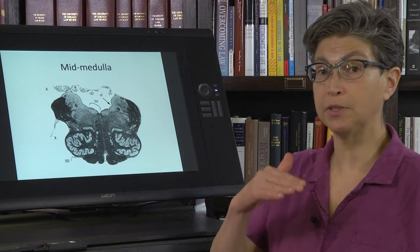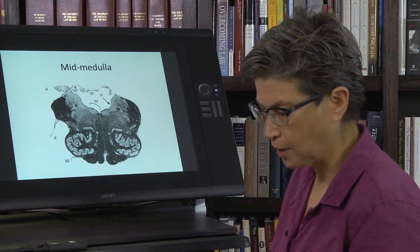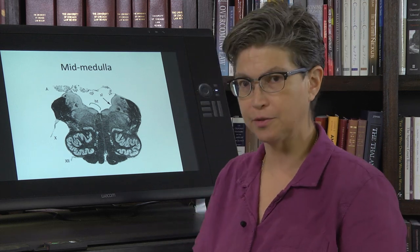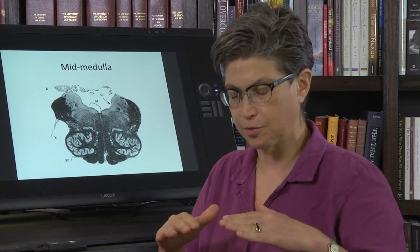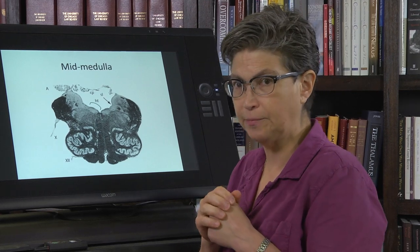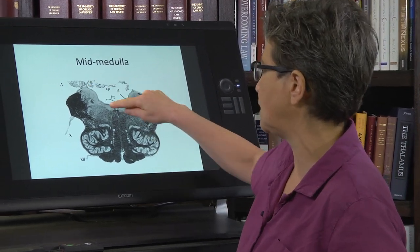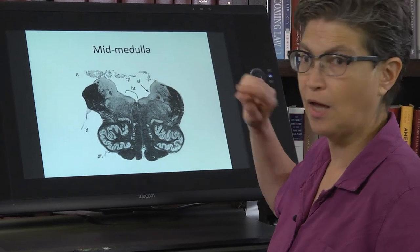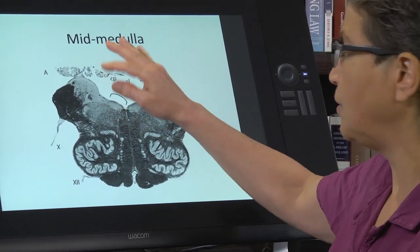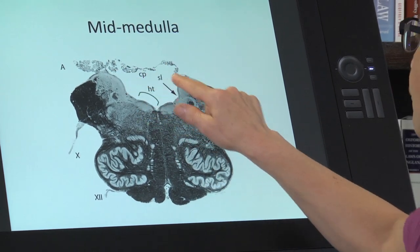We're now in the mid-medulla, and the firestorm that was present more caudally is settling down, so this is going to be a little bit less dense. The first thing you notice is that we don't have a central canal — we have the fourth ventricle. The central canal has opened up, and here's the fourth ventricle.